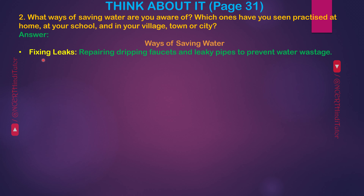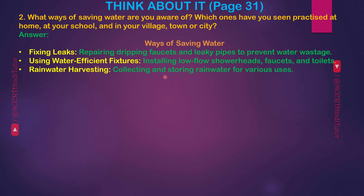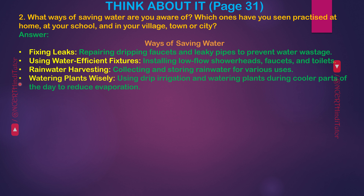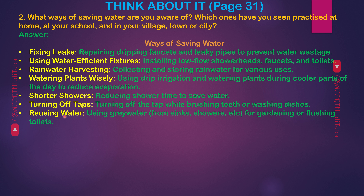Ways of saving water. First, fixing leaks — repairing dripping faucets and leaky pipes to prevent water wastage. Next, using water-efficient fixtures — installing low-flow shower heads, faucets, and toilets. Next, rainwater harvesting — collecting and storing rainwater for various uses. Next, watering plants wisely — using drip irrigation and watering plants during cooler parts of the day to reduce evaporation. Shorter showers — reducing shower time. Turning off taps while brushing teeth or washing dishes. Reusing water — using grey water from sinks and showers for gardening or flushing toilets.